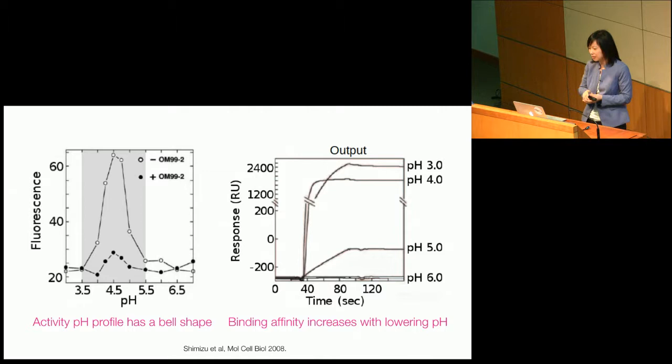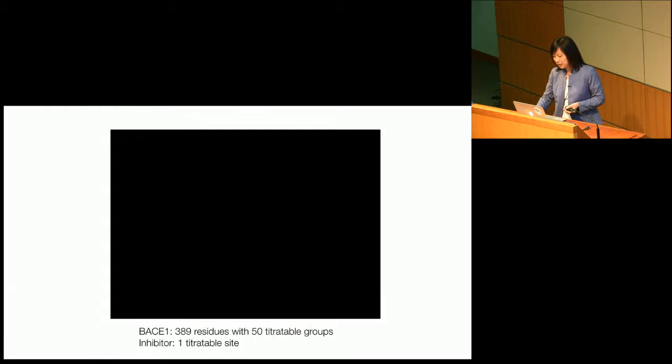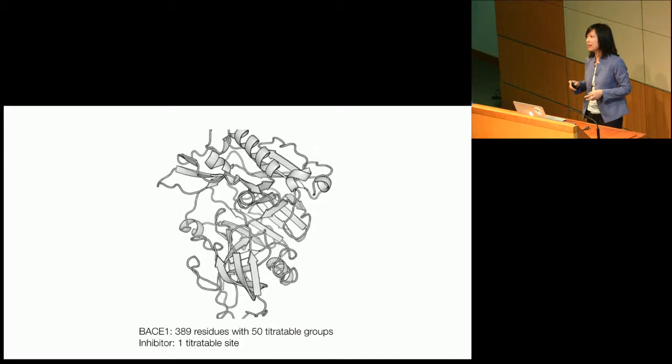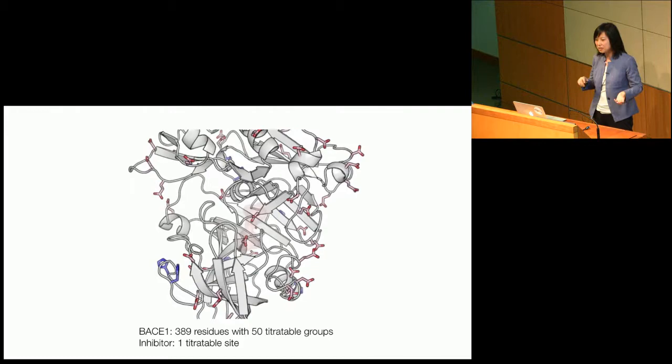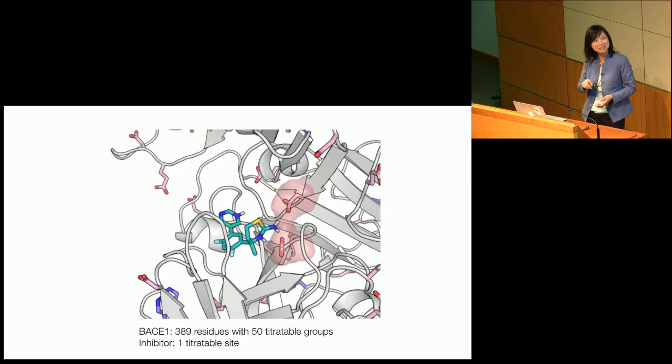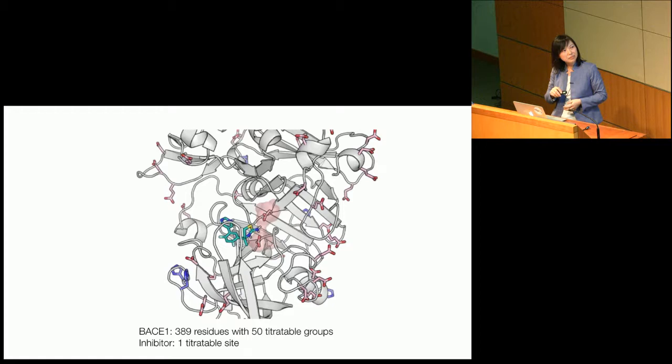Now we're going to do the constant pH MD simulation. We have a protease containing about 400 residues. For this academic exercise, we're going to titrate all the aspartic residues, glutamic residues, as well as histidines — in practice, for industrial applications, we don't need to do all of that. We also have an inhibitor, and we're going to titrate one site on the inhibitor.